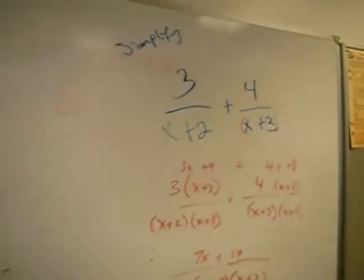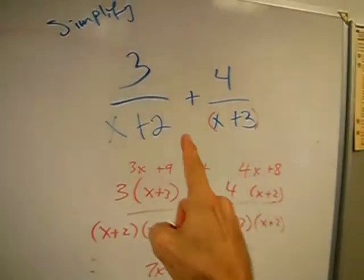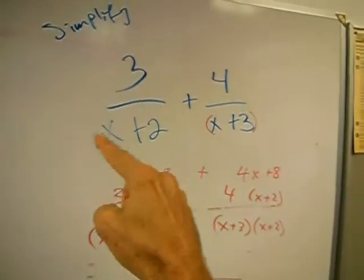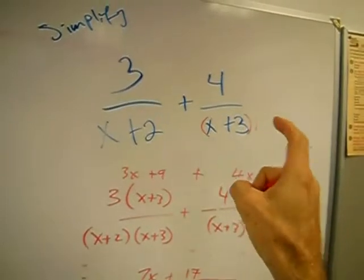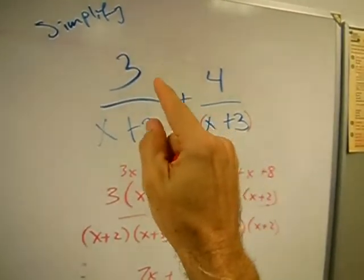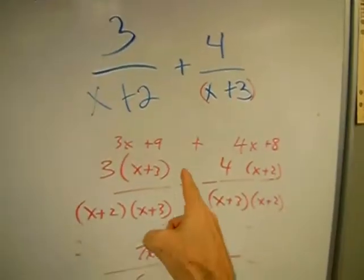In the same way, we look at this problem. We say this X plus 2 has to be multiplied top and bottom. This X plus 3, we're going to multiply it top and bottom here, and that's what we got here.